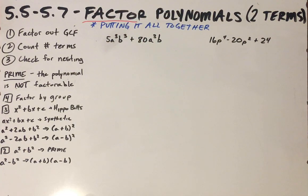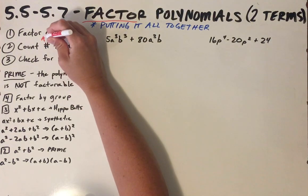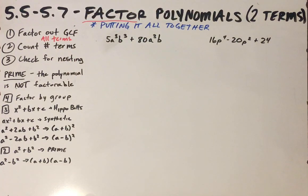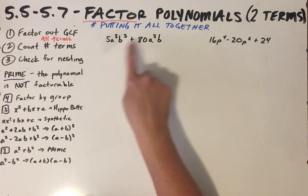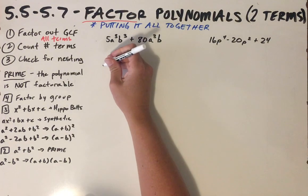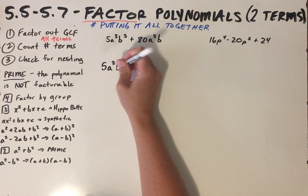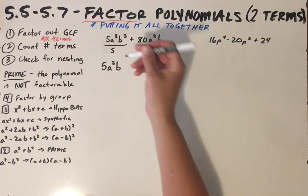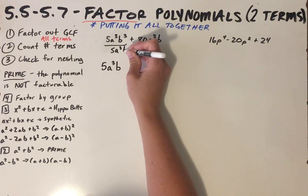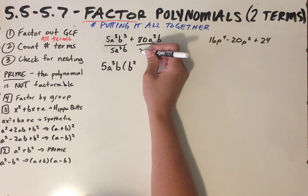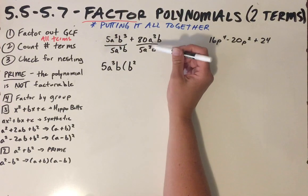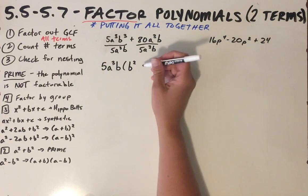I'm going to look for a GCF — a greatest common factor — that is in common between all the terms. Looking here, these two terms both have a 5, an a cubed, and a B in common. So when I take out 5a³b, I'm dividing it out of each term. When I divide the first term by 5a³b, everything cancels except B squared. When I divide the second term, everything cancels except 16.